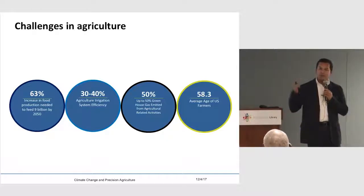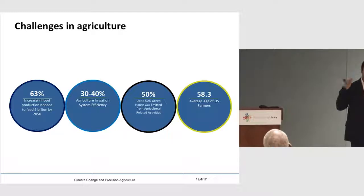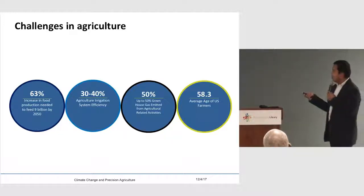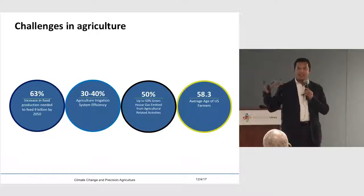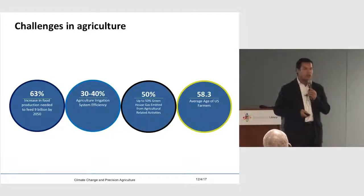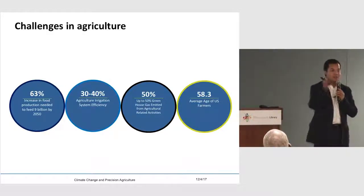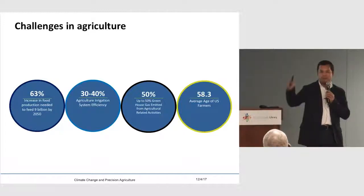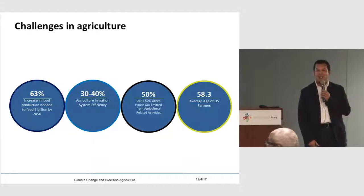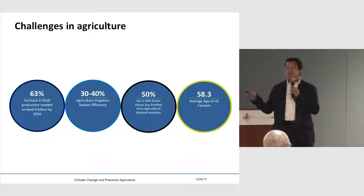We talk about climate change, CO2, methane, and other gas emissions polluting the environment. Agriculture is responsible for about 50% of gas emissions. We need more food, but how can we produce it without causing more damage to the air, environment, or water systems? The average age of farmers today in the U.S. is high, and in another decade or two it will be about 70 years old — raising concerns about who will farm in the future.